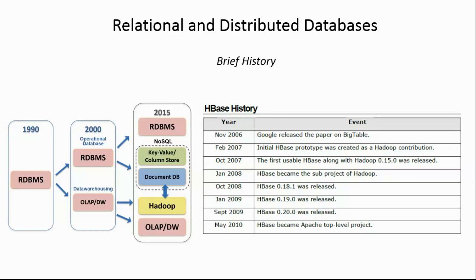That distinction has been followed through to distributed database systems. In 2015, you had the original RDBMS systems, and you also had NoSQL systems, which are essentially key-value columnar stores that were developed to run on Hadoop.